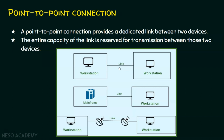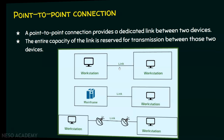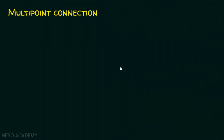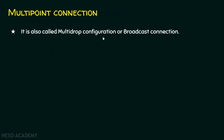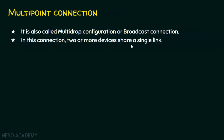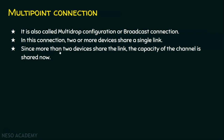Now let's see the second type: multipoint line configuration, also called multipoint connection. In a multipoint connection, more devices share a single medium — the link is shared among the devices. It is also called multi-drop configuration or broadcast connection, because two or more devices share a single link. Since more than two devices share the link, the channel capacity is also shared by those devices. This multipoint connection can be spatial or temporal.